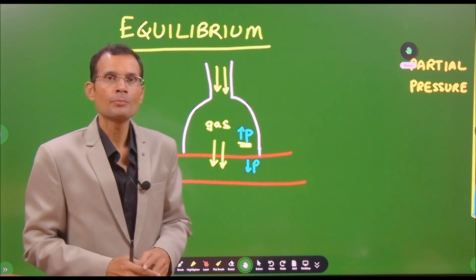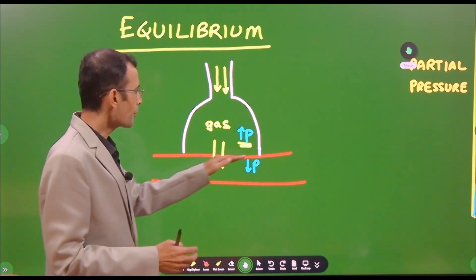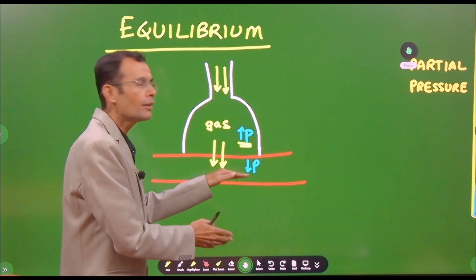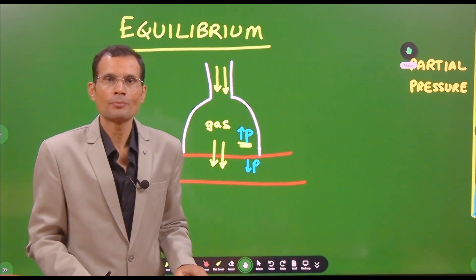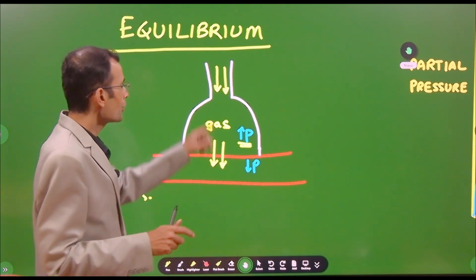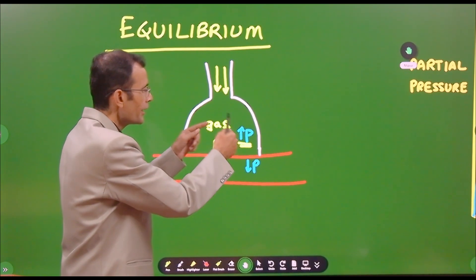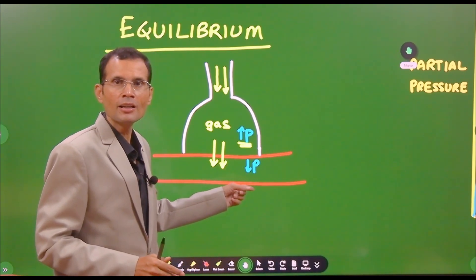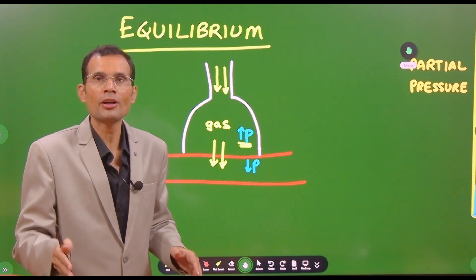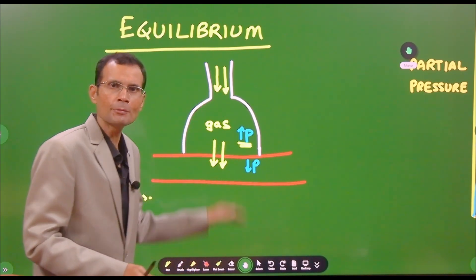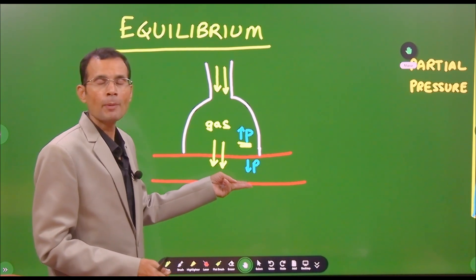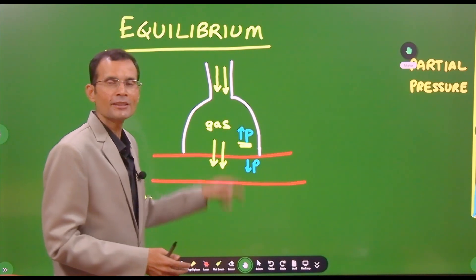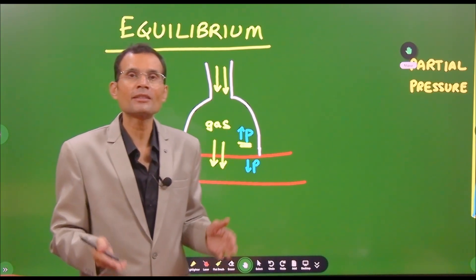Remember: when a gas diffuses into the pulmonary blood, its partial pressure there will rise, and eventually the alveolar partial pressure and the blood partial pressure will become equal — equilibrium — and diffusion stops. But imagine a gas whose partial pressure in the pulmonary capillary blood remains almost zero, even after a lot of diffusion. It keeps diffusing through the respiratory membrane, but its partial pressure in the blood is not rising. This gas is useful for us, because from the rate of its diffusion per minute we can measure the diffusing capacity of the respiratory membrane.